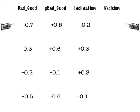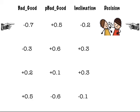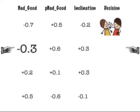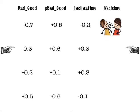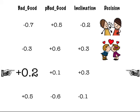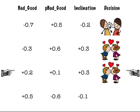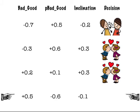Let's try specific numbers. If Ann is a really bad person with a Bad Good of minus 0.7, but she really likes Joe at plus 0.5, those add up to minus 0.2 — still negative, so she does the nasty thing. If she's not quite so bad at minus 0.3, and likes Joe more at plus 0.6, those add up to plus 0.3 and she does the nice thing. If she's a fairly nice person at plus 0.2 and kind of likes Joe at plus 0.1, those add up to plus 0.3 — nice thing again. But even if she's really nice at plus 0.5, if she hates Joe at minus 0.6, those add up to minus 0.1 and she ends up doing the nasty thing.